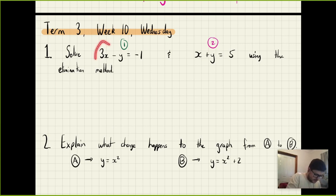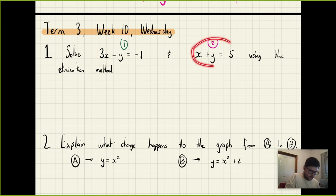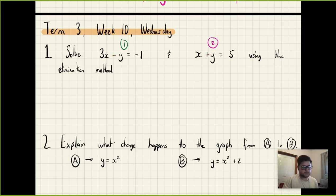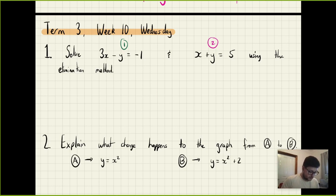We have 3x minus y is equal to negative one, and x plus y is equal to five. Because we have the same coefficient in front of the y's — both one — we don't have to multiply them by anything. If we subtract them, we'd get negative y minus y, which is negative 2y, so subtracting is a bad idea. Instead, I'm going to add them. Negative y plus y is zero, so adding is the best option.